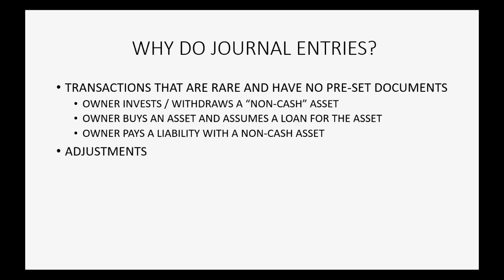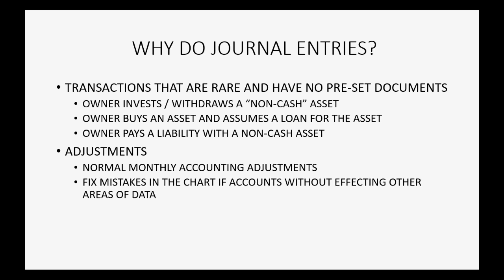We also make journal entries to adjust the accounts. This means we make normal monthly accounting adjustments to adjust for the difference between the results in our bookkeeping and the way we have to report our final numbers. We could also fix mistakes in the chart of accounts without affecting other areas of data. Adjustments should be made by your accounting professional, but if you're the bookkeeper, the top three transactions might come up and you need the ability to record them before waiting for your accounting professional. That's why we will demonstrate them here in this video.